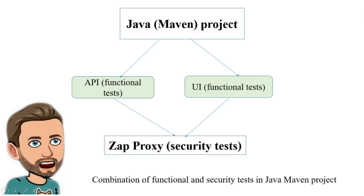If you want to hack an application, manual efforts and knowledge are always better, because every application is unique and you should analyze holes in the application. But anyway, a scanner can check thousands of combinations and help you hack it. Remember that you can hack only your own application as a white-hat hacker. If you try to use ZAP on a non-permitted website, you break the law.